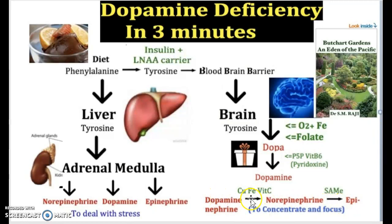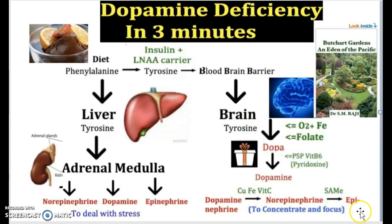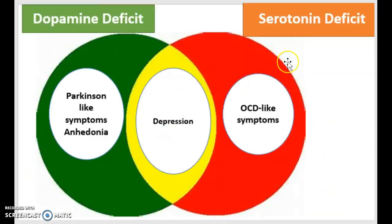Once it has reached the state of dopamine, it can again convert into norepinephrine and epinephrine. For it to convert into norepinephrine, copper, iron, and vitamin C must be present. Once it has reached norepinephrine, if the methyl donor SAMe is present, it will be able to convert into epinephrine. Once it has reached these three monoamine states, they are all used to help concentrate and focus.